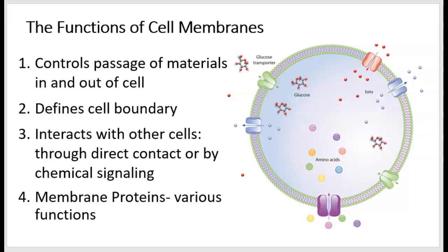Or the cell membrane can communicate with chemicals. Chemical communication is called cell signaling, and it involves one cell releasing a chemical compound that binds to a receptor on another cell's membrane. The last function of the cell membrane relates to its proteins. The proteins within a cell membrane have a variety of functions — there are so many different types. The cell shown on this slide has six membrane proteins: one purple, two blue, two green, and one red.